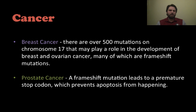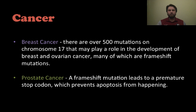The last topic is cancer. Breast cancer is one example where over 500 different mutations on chromosome 17 have been identified that may play a role in the development of breast and ovarian cancer — most due to frameshift mutations from insertions or deletions. Prostate cancer is another example involving a frameshift mutation that leads to a premature stop codon. If a single nucleotide change creates a stop codon, the protein is terminated early; in prostate cancer, the protein that normally prevents apoptosis is no longer made, so cancer cells keep growing without undergoing apoptosis.